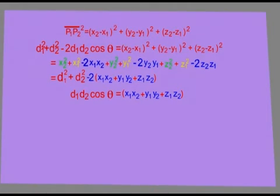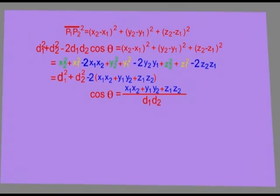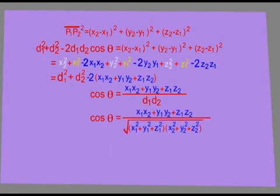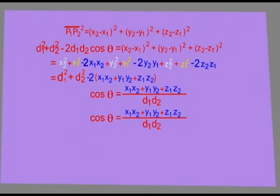We can write cos theta is equal to x1x2 plus y1y2 plus z1z2 over d1d2. d1 and d2 can be replaced by their values in x, y, and z.